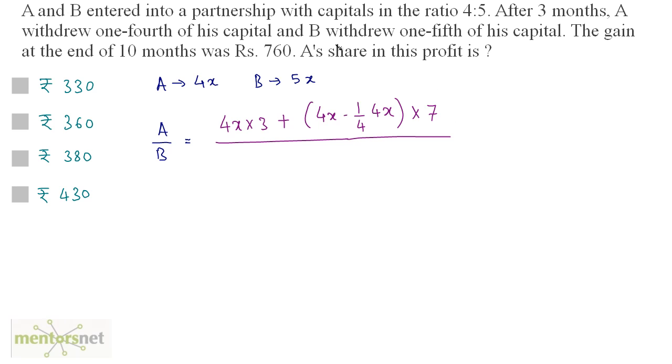Divided by similar is the case with B. B invests 5x. So 5x times 3 for the first three months plus for the next seven months, B's amount will be 5x minus one-fifth of 5x because B withdrew one-fifth of his capital after three months. So 5x minus one-fifth of 5x times 7. So this is equivalent to 4x times 3 is 12x plus we have this 4 and this 4 get cancelled out.